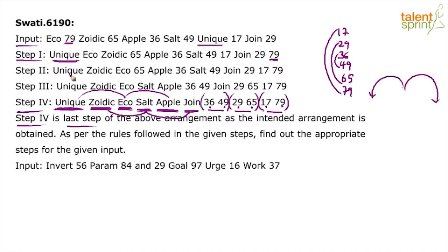We are arranging inward: the first and last positions get fixed in step one, then we move inward. For example, unique, unique, unique remains fixed from step one onward, and 79 remains fixed at the end. In step two, we move zoidec to the second position from the left, and 17 to the second position from the right. Everything else remains as it is: echo 65, apple 36, salt 49, join 29.